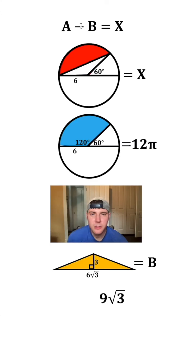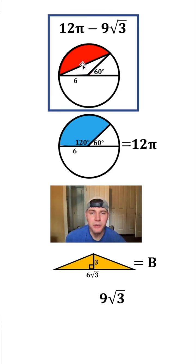So let's change these up here. We'll make the a into the 12 pi, and we'll make the b into 9 root 3. And now we have the answer to the question. The area of this red region is 12 pi minus 9 root 3.